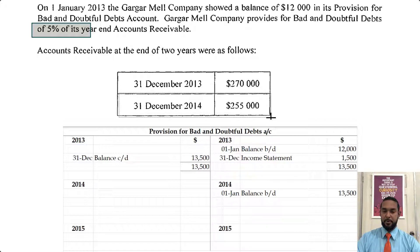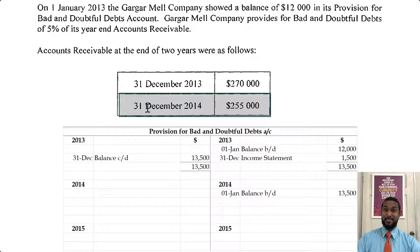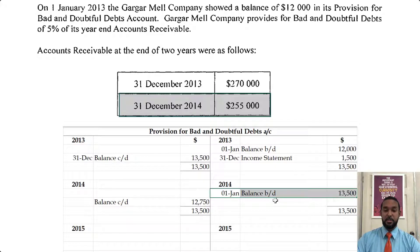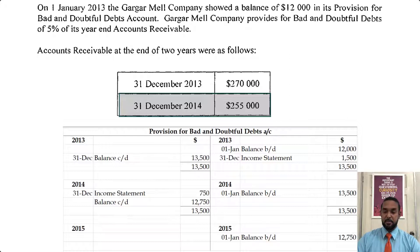At the end of 2014, the receivables are $255,000. If 5% of $270,000 was $13,500, then 5% of $255,000 will be some figure less — which is $12,750. Because that is a decrease, the balance that has to be carried on is $12,750. We're going to have to debit the provision account to record that decrease. Because if we have a credit balance initially, to reduce our credit balance you have to debit the account. And that's going to be $750. The balance brought down starting 2015 is $12,750.